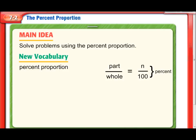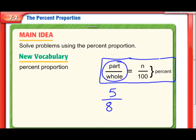So what is the percent proportion? We're going to be solving problems using it, so what does it look like? Well, here it is, right here. It's basically a proportion, just like we've done in previous chapters. But this time, one of the ratios is the part over the whole. So I'm kind of imagining like 5 slices of pizza out of 8 on a whole pizza. And that's going to equal the percent, I'll just do an N there, over 100.